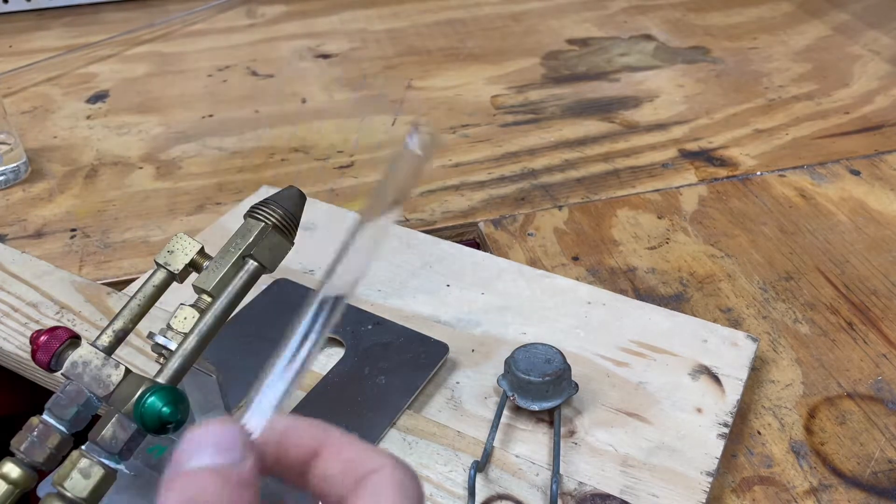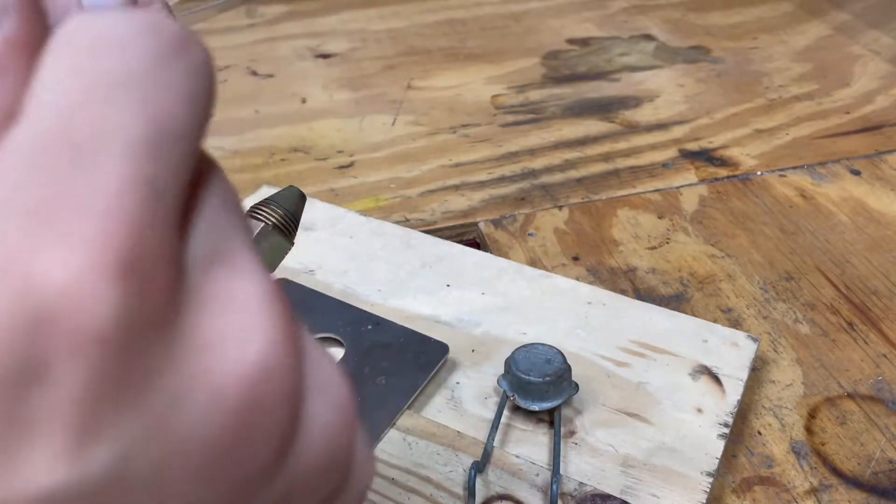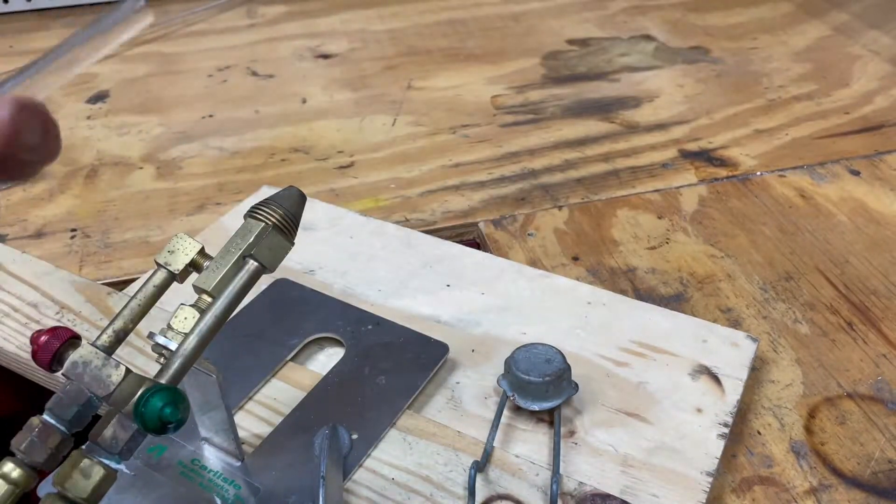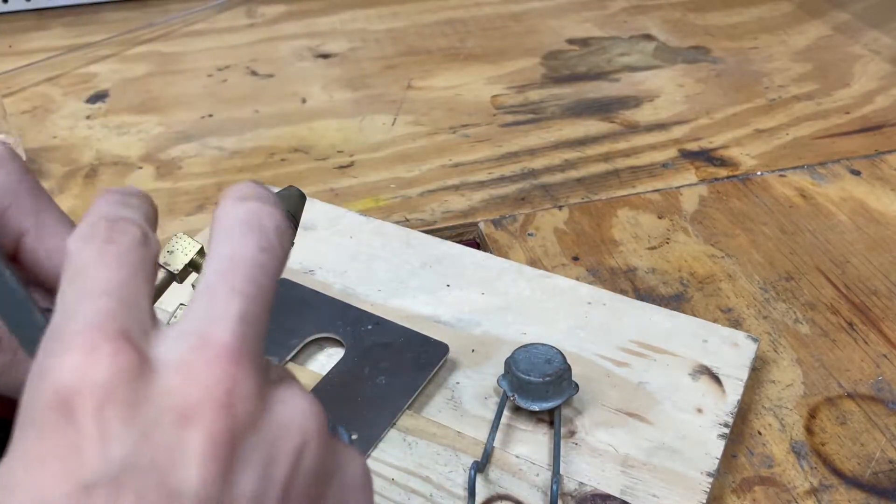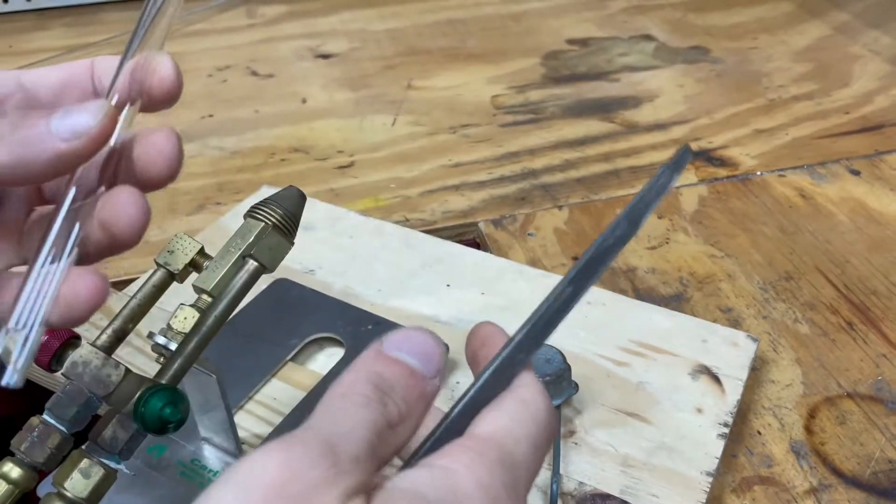This is more experienced and takes a bit more effort. You can use a file or you can use a tungsten knife, make a basic score and then break it the way that you did previously.